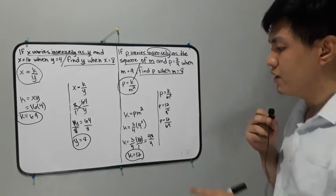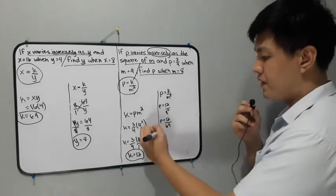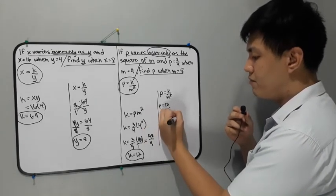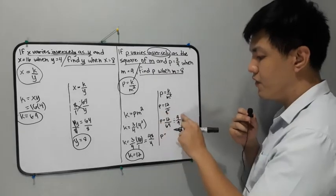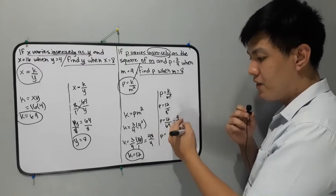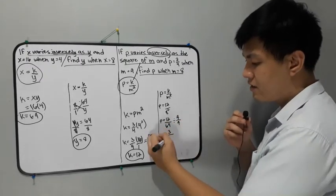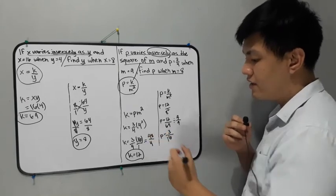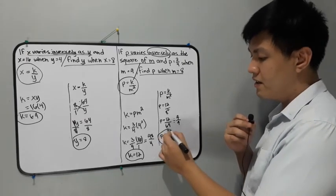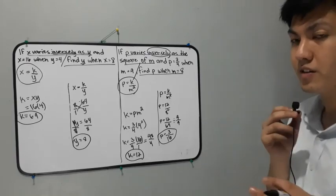12 over 64 is not yet our final answer since we can reduce it to lowest terms. 12 and 64 can both be divided by 4. So 12 divided by 4 is 3, and 64 divided by 4 is 16. Now our answer is already in lowest term or simplest form. Therefore, the final answer is P is equal to 3 over 16.